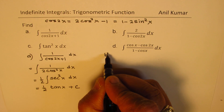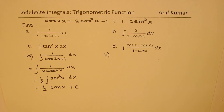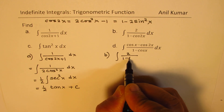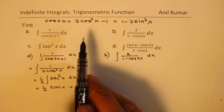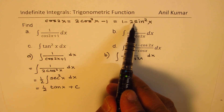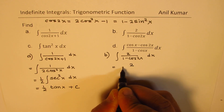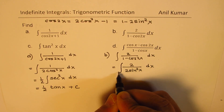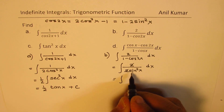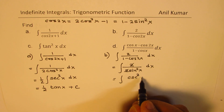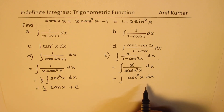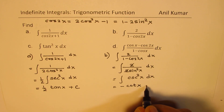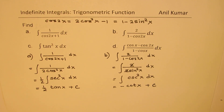Now let's look into part (b), which is very similar. We find the integral of 2 over (1 − cos 2x) dx. When it is 1 minus cos 2x, the denominator becomes 2 sin squared x. So we write this as 2 over 2 sin squared x dx. The 2s cancel, giving the integral of 1 over sin squared x, which is cosecant squared x dx. The integral of cosecant squared x is minus cot x, so we get minus cot x plus c.